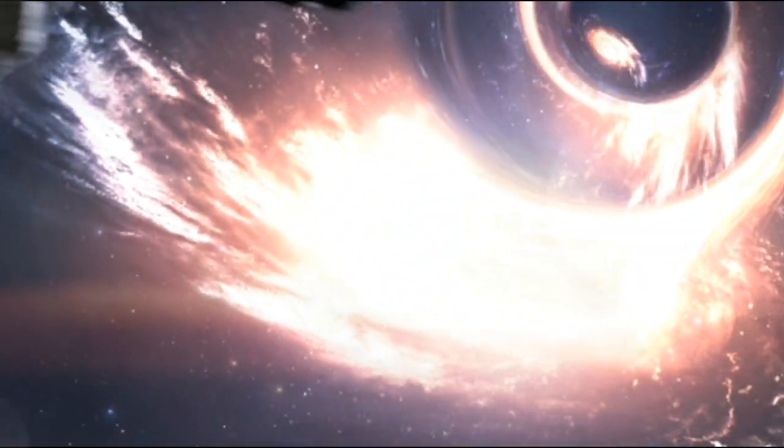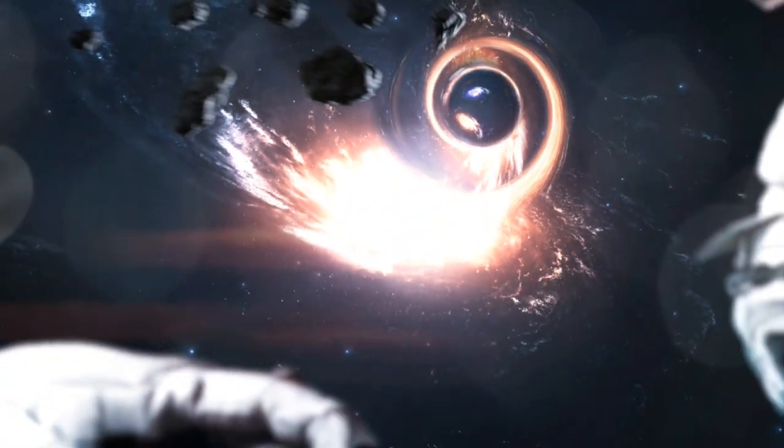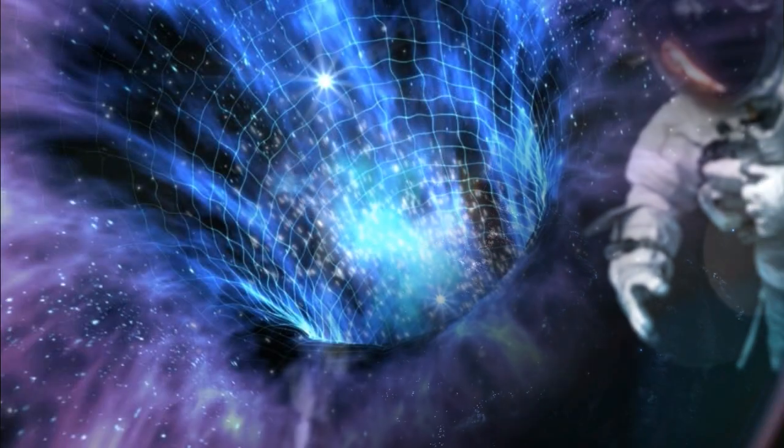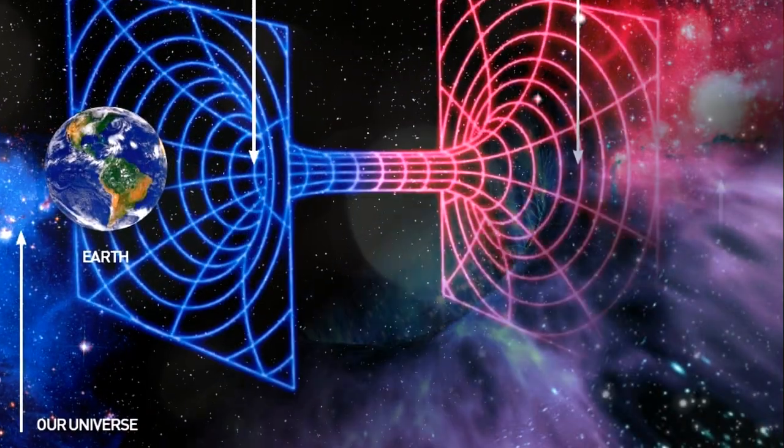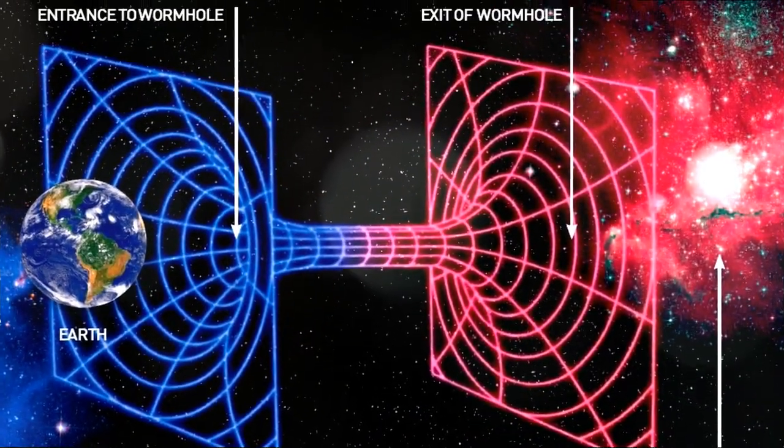A wormhole can be visualized as a tunnel with two ends, each at separate points in spacetime, that is, different locations or different points of time.